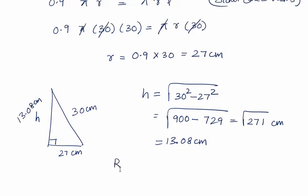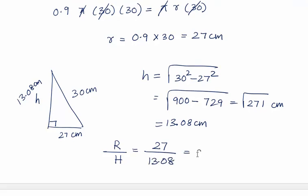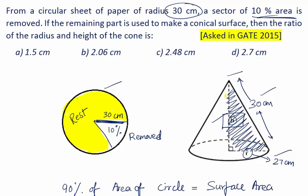Now we have to find the ratio of radius to height. The radius is 27 centimeters and the height is 13.08 centimeters, which gives a ratio of approximately 2.06. Looking at the options, option B is the correct answer. Thank you.